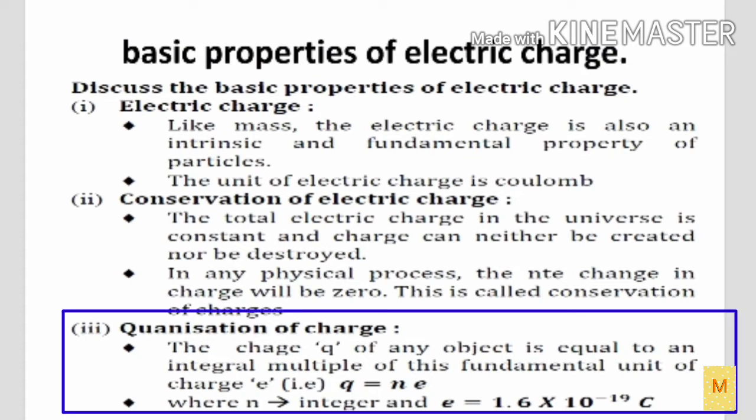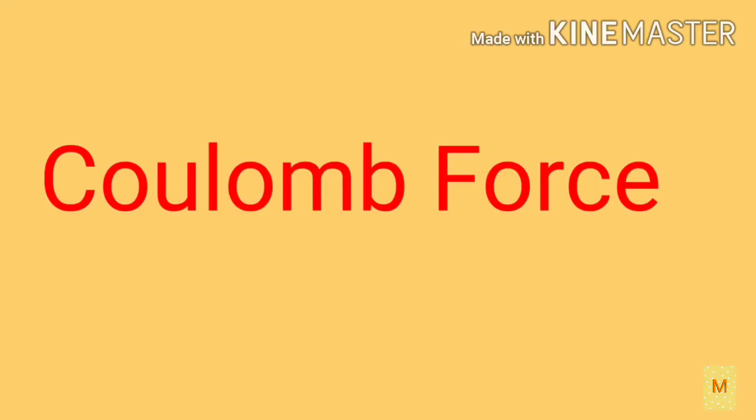Next one: quantization of charge. It is understood that like mass for every object, the electric charge is also said to be the fundamental property of particles. If the object is made up of n number of particles, the total charge of the object is calculated by the equation q = n × e, which tells that the charge of any object is equal to the integral multiple of this fundamental unit of charge e, where n is said to be an integer indicating the number of particles of the object, and e = 1.6 × 10⁻¹⁹ C, which indicates the charge of the electron.